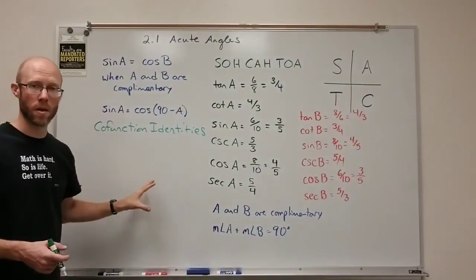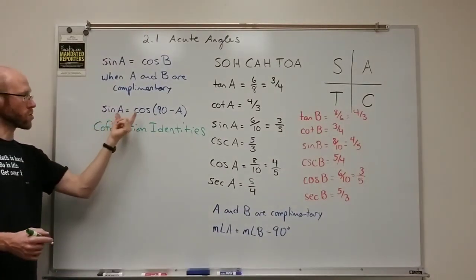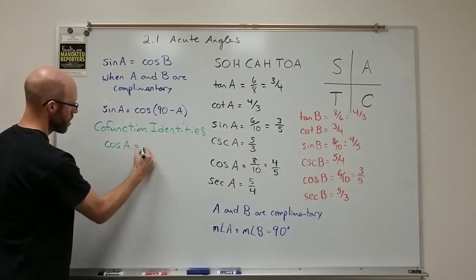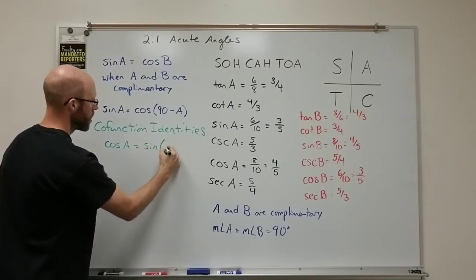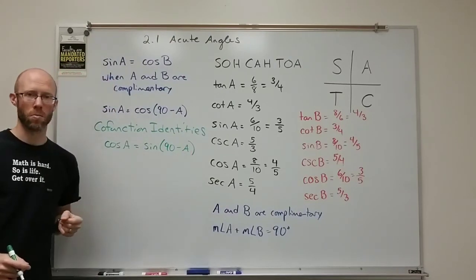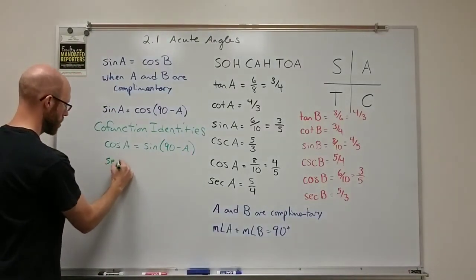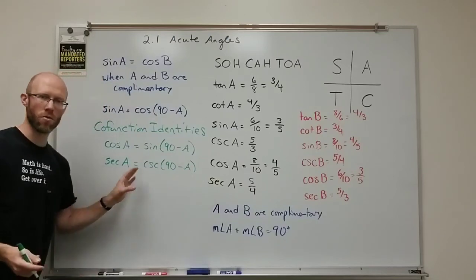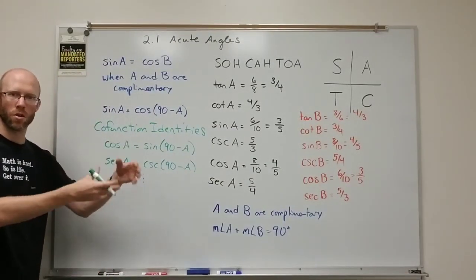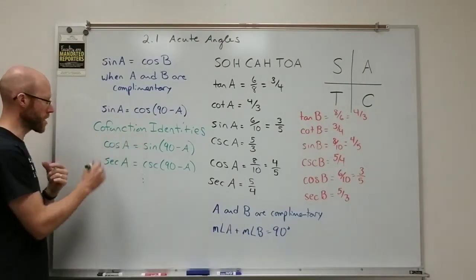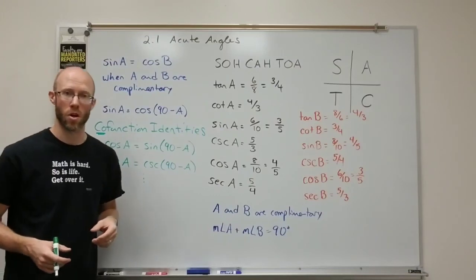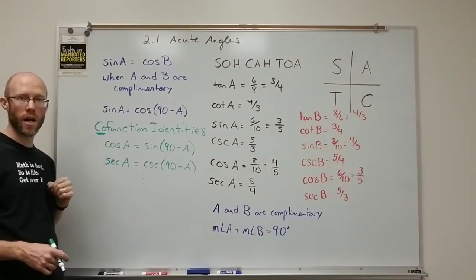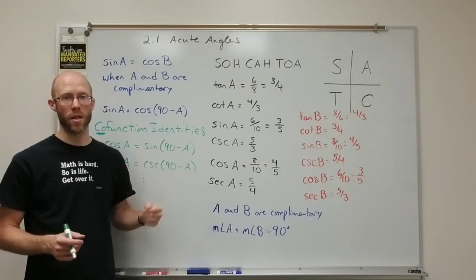I'll write a couple of these up. There are six co-function identities. You can switch the sine and cosine: the sine of an angle equals the cosine of its complement, and the cosine of an angle equals the sine of its complement. The secant of an angle equals the cosecant of its complement, and so forth — and similarly for tangent and cotangent. The reason they're called co-function identities is that the prefix 'co' reflects how each trig function equals the co-function of its complement. This holds true for any right triangle.